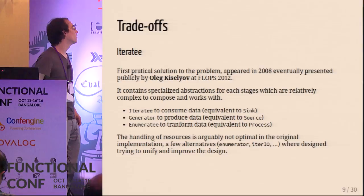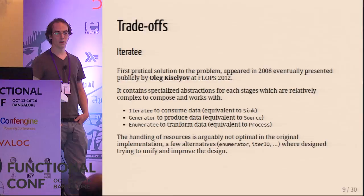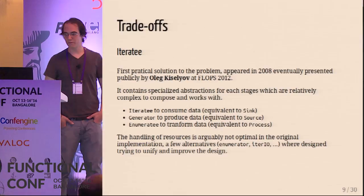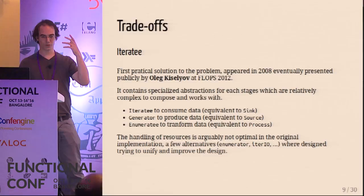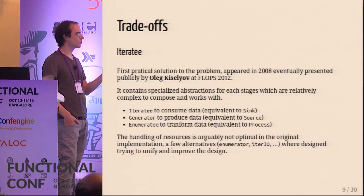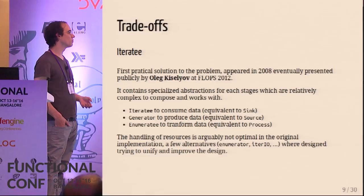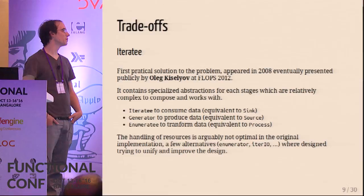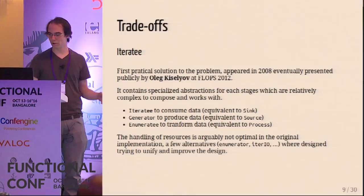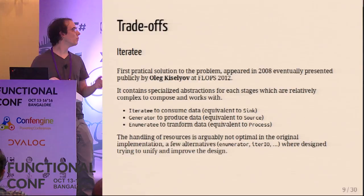Iteratees were the first practical solution, developed by Alec Kislev. What I don't like is that they contain specialized abstractions for different stages, making it harder to compose. For example, you have an iteratee to consume data (equivalent to a sink), generators to produce data, and enumeratees to transform data - but there's no common type between them. Resource handling is also arguably not optimal in the implementation. There were alternatives like enumerate-io and others, but they solved some problems without being truly convincing.